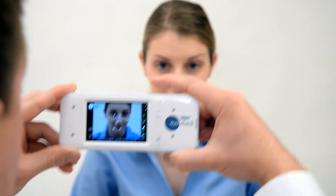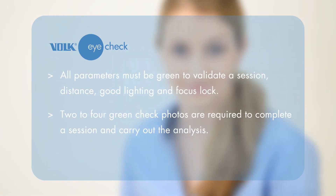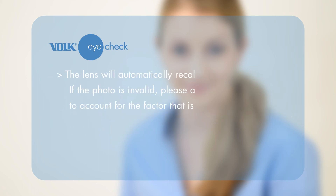For best measurement accuracy, immediately full-press the shutter button once correct focus has been achieved. All parameters must be green to validate a session: distance, good lighting, and focus lock. Two to four green check photos are required to complete a session and carry out the analysis. The lens will automatically recalibrate after four photos.